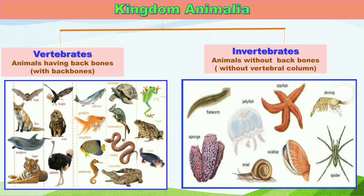Animals like flatworm, jellyfish, sponge, snail, starfish, shrimp, and spider all belong to invertebrate animals. Today we are going to study about the invertebrates only, and in invertebrates there are lots of animals.